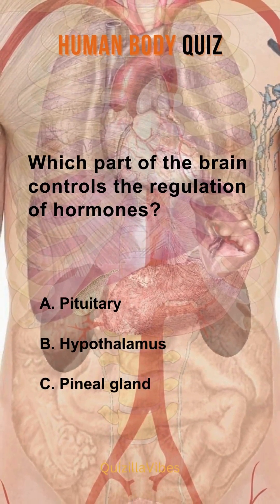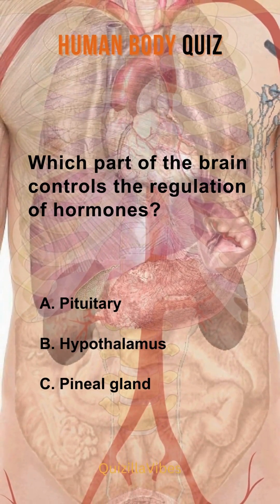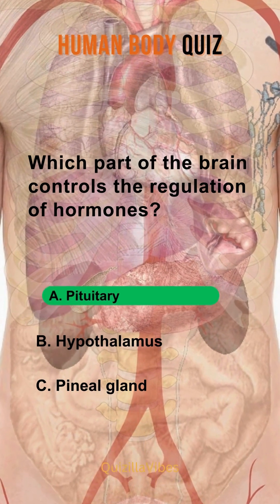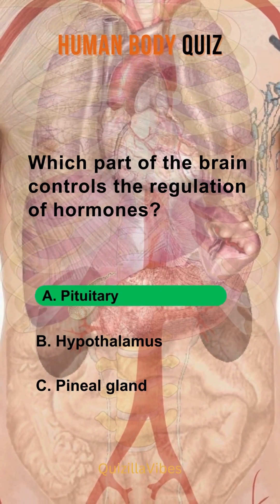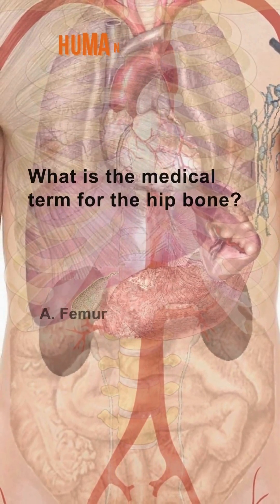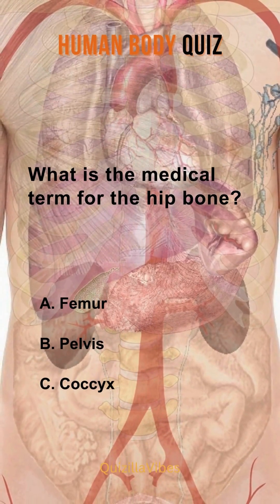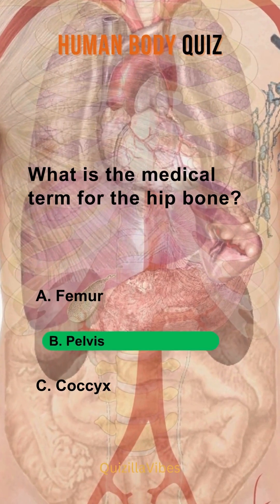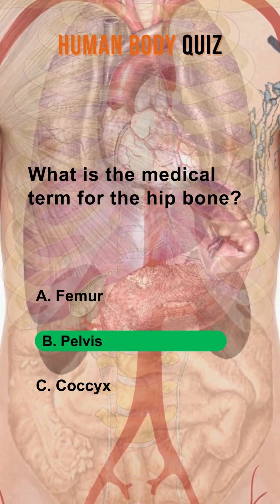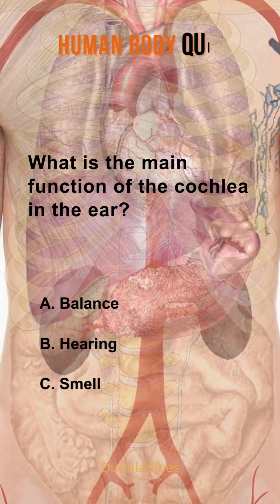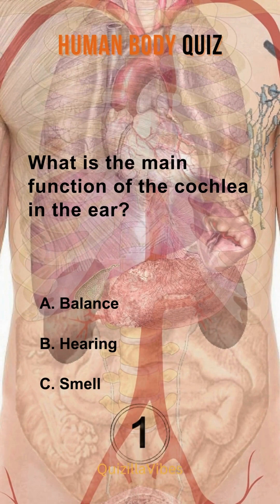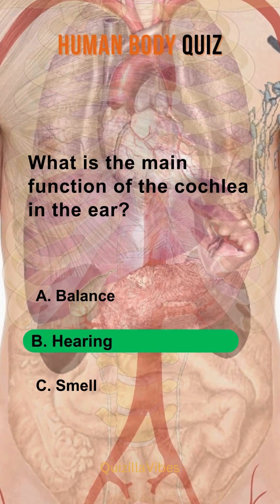Which part of the brain controls the regulation of hormones? Pituitary. What is the medical term for the hip bone? Pelvis. What is the main function of the cochlea in the ear? Hearing.